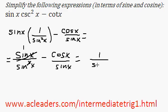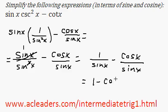So 1 over sine x minus cos x over sine x. Now we already have a common denominator of sine x. So simplifying it completely will look like this: 1 minus cos x over sine x.